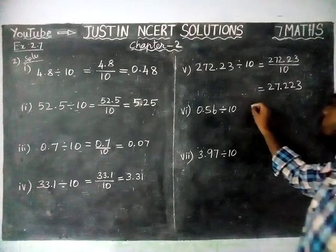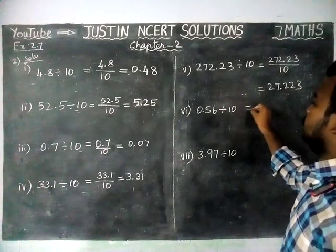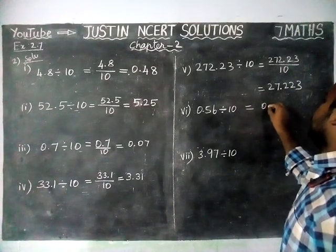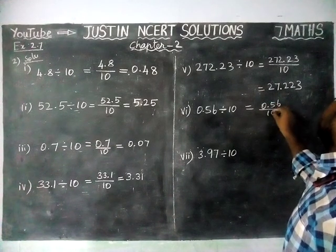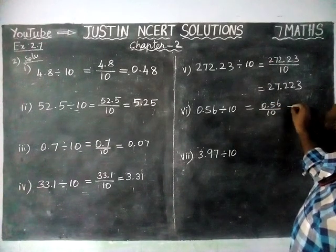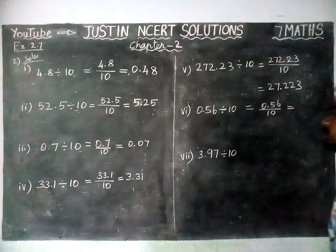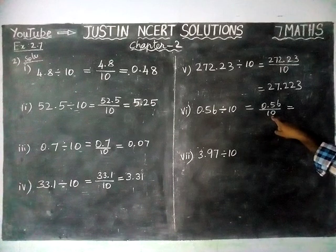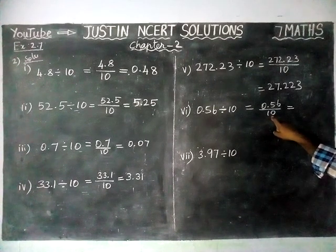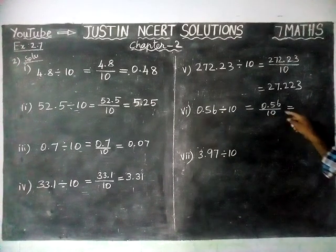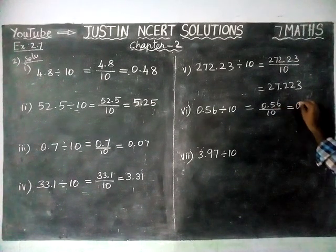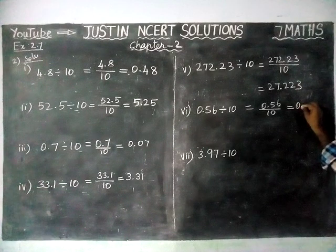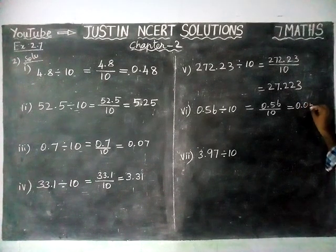Sixth question: 0.56 divided by 10. We are dividing by 10, so we have to move left hand side one step. Already here we have two decimal digits, so we are going to add a zero. The answer is 0.056.